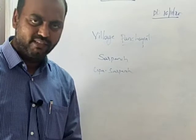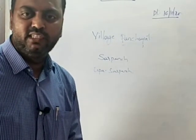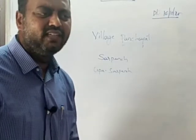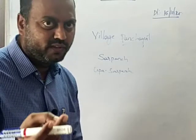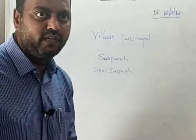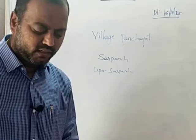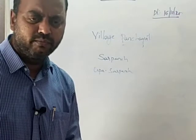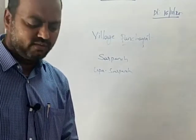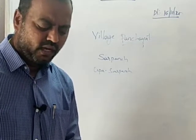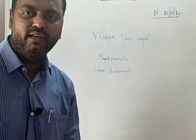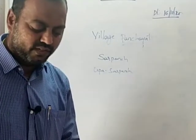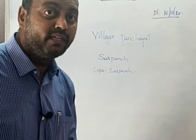Coming to where gram panchayats get their funds — proposals are sent to the mandal parishad and jilla parishad, who allocate the money. The taxes collected from the village are very meagre, so gram panchayats do not get much income from self-imposed taxes. They get about one third of their income from sources like house tax, water tax, and land tax. The bulk of their resources depends on grants from the state and central government meant for development and implementation of specific programs, such as funds under the Mahatma Gandhi National Rural Employment Guarantee Act.